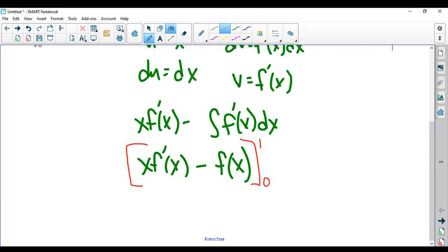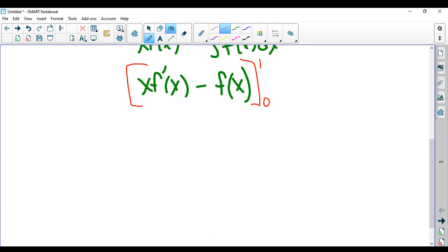So as always, you plug in 1. So we have 1 times f prime of 1 minus f of 1. And then subtract what you get when you plug in 0. So it would be 0 minus f of 0.